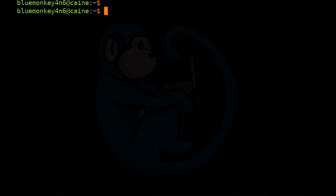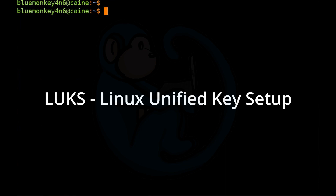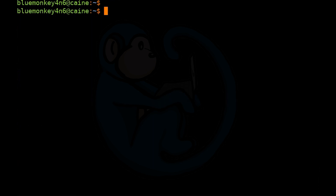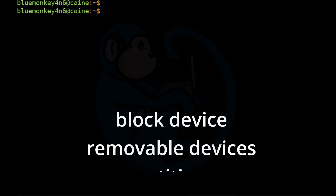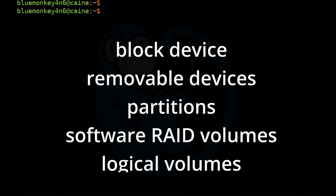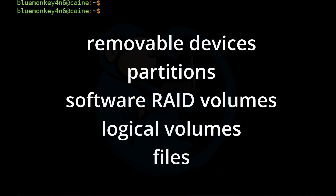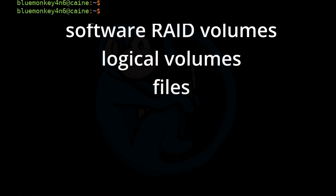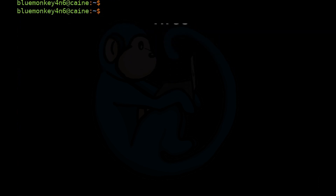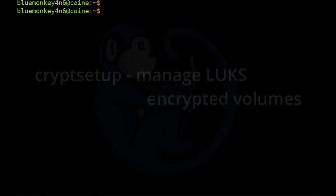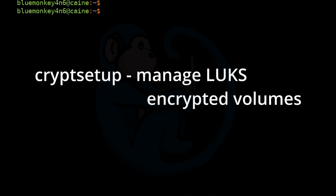One of the more common methods for disk encryption in Linux is LUKS, Linux Unified Key Setup. LUKS can encrypt an entire block device, removable devices, partitions, software RAID volumes, logical volumes, and files. The tool to manage and access the encrypted volumes is called cryptsetup.